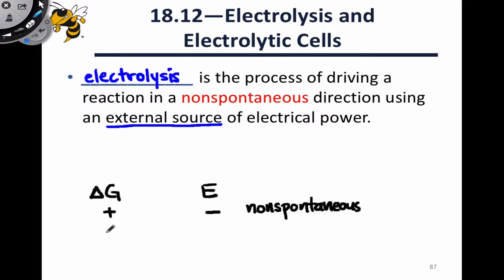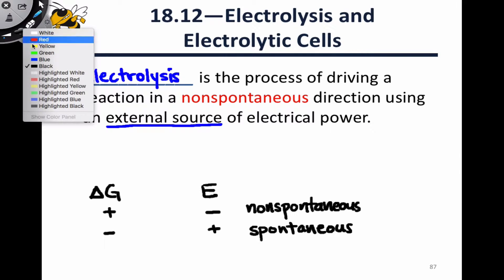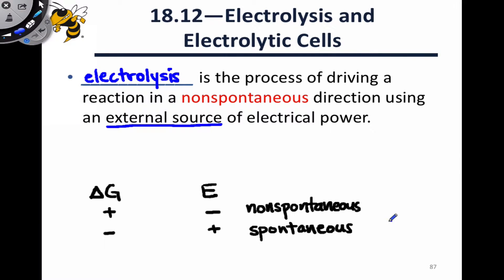When delta G is negative, the cell potential is positive, and we're in a situation in which the forward reaction is spontaneous. This is the typical configuration for a galvanic cell where we're using that negative delta G to produce a positive cell potential and using that potential for electrical work.